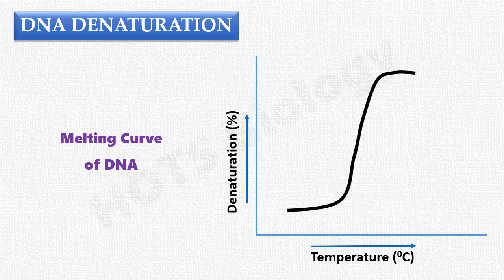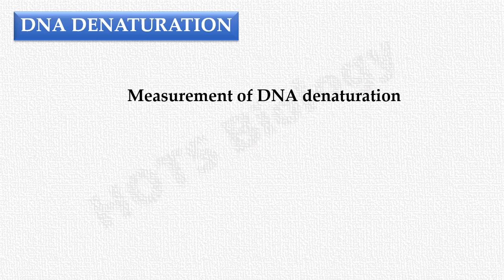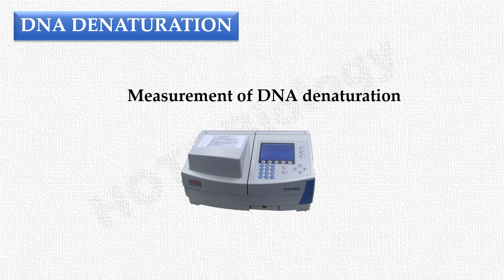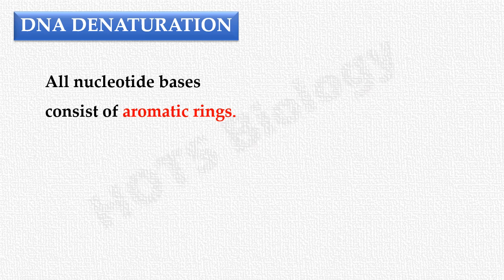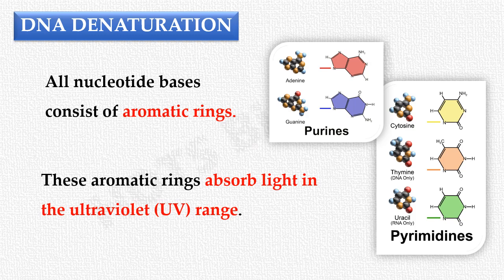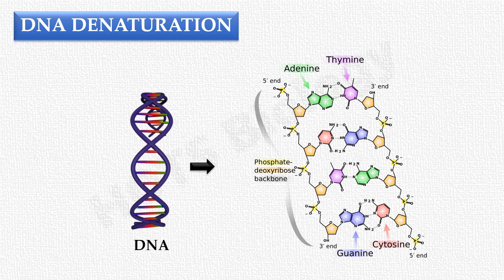The question is: how do we measure DNA denaturation? DNA denaturation is measured using a spectrophotometer. This is based on the fact that all nucleotide bases consist of aromatic rings. These aromatic rings absorb light in the ultraviolet range. Nucleic acids such as DNA are made up of these bases, and therefore the DNA molecule will also absorb light in the UV range.